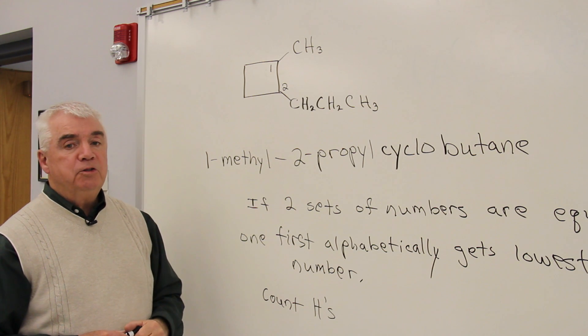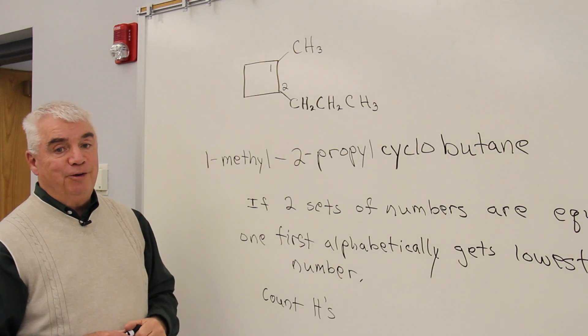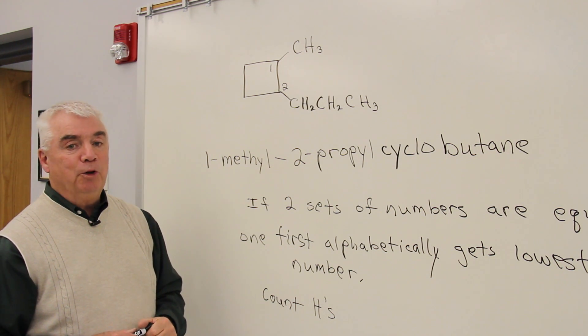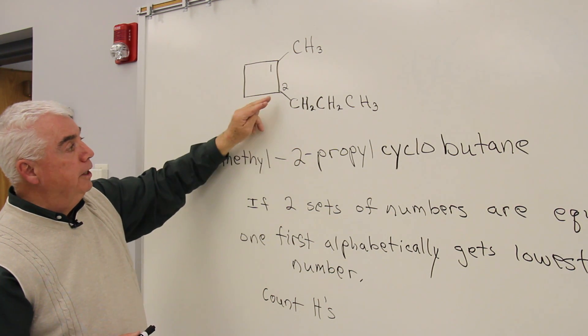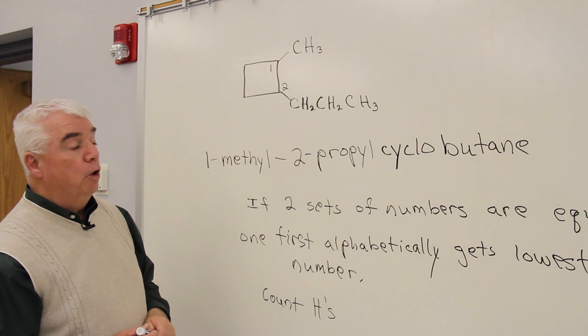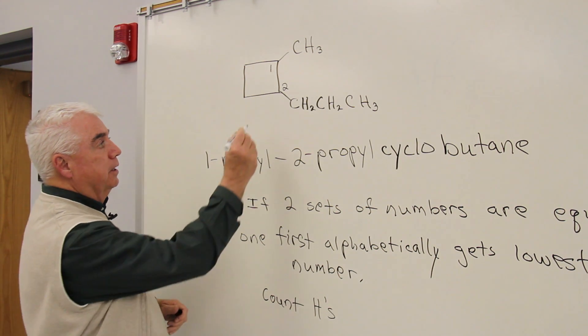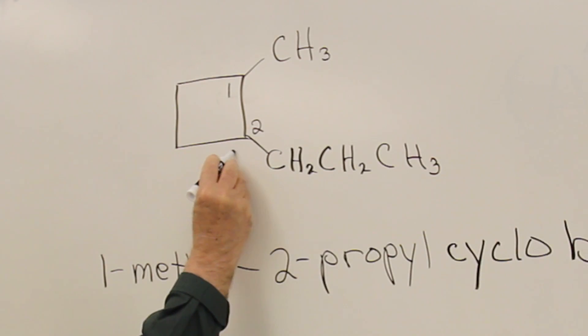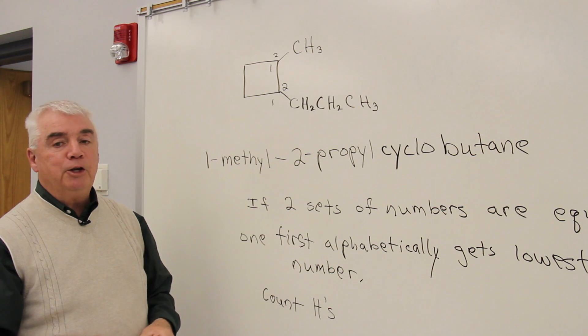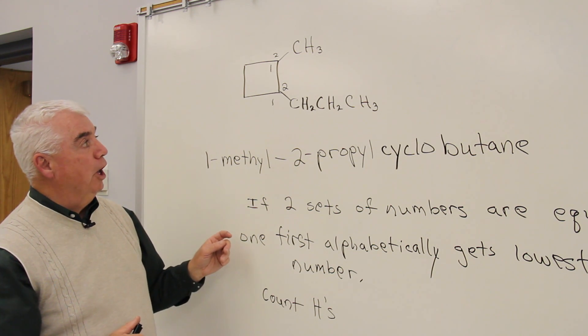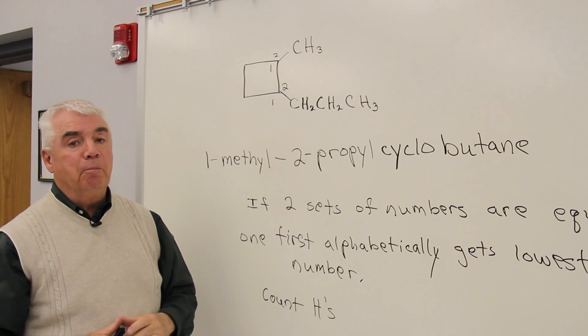And this time, when the two groups are different, there's two possible numbering systems. I could locate the position where the methyl is as number one and this is number two. Or we could do just the opposite. This could be number one, and this position up here could be number two. And a special IUPAC rule comes into play when the two sets of numbers are identical.